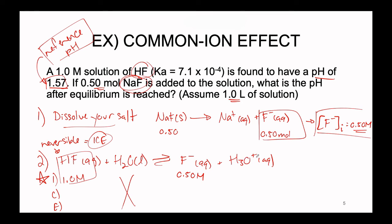For H3O+ we are not told any initial information. Yes, we have a reference pH, but remember those pHs are at equilibrium, not initial conditions. So we assume no H3O+ initially. The reference pH of 1.57 is like a control flask sitting off to the side. We now let the reaction reach equilibrium — the HF dissociates into F- and H3O+, meaning at equilibrium we will have 1 minus x for HF, 0.5 plus x for F-, and x for H3O+.